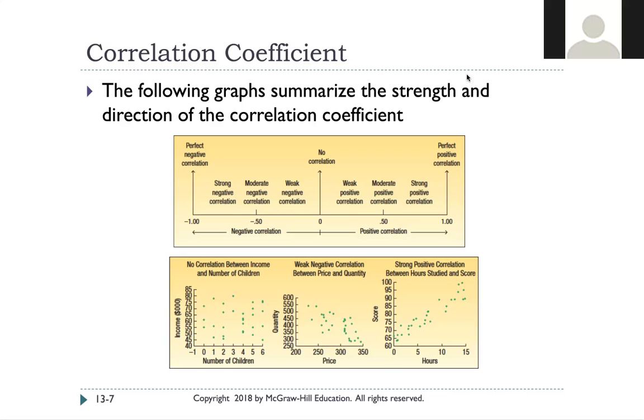So you can see in these graphs down below the very first one, it doesn't look like those two variables have anything in common. The dots are all over the place. In the second graph, you can tell that there's definitely a negative trend, but the dots aren't exactly closely clustered together like they are in the last graph, which shows a strong positive correlation.